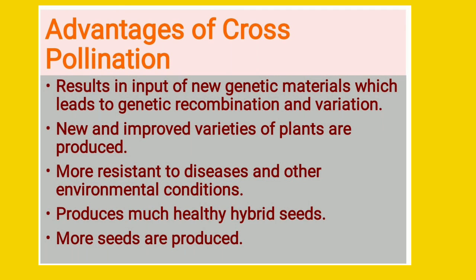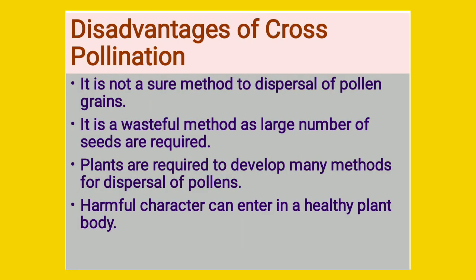Now the disadvantages of cross pollination: the first disadvantage is that it is not a sure method of pollination. Plants have to depend upon various agencies for transfer of pollen grains; without agencies and without modifications they cannot pollinate properly. The second disadvantage is that it is a wasteful method, as large quantities of pollen grains are lost in transit during the process of transfer from one flower to another. Large amounts of energy are required to produce large quantities of pollen grains.